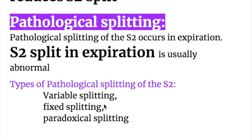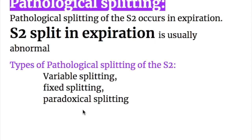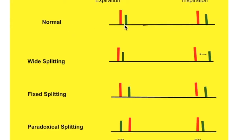Pathological splitting of the second heart sound occurs in expiration — S2 split in expiration is usually abnormal. Types of pathological splitting include: variable splitting, fixed splitting, and paradoxical or reverse splitting. In the diagram, A2 is marked as a red bar and P2 as a green bar, showing P2 closing after the aortic valve, with the split widening during inspiration.